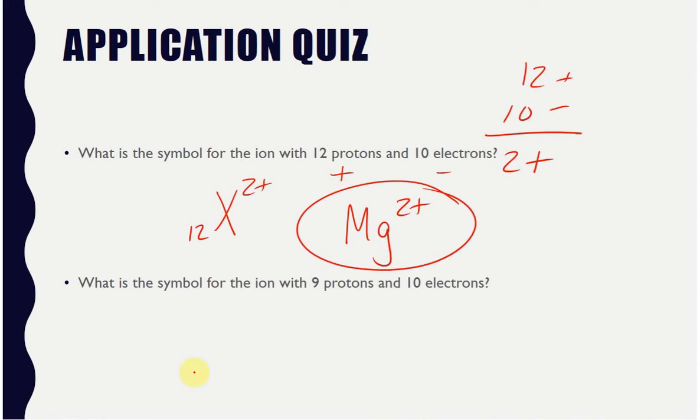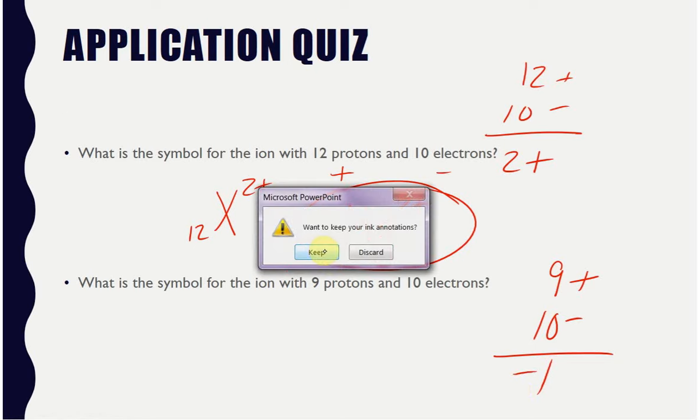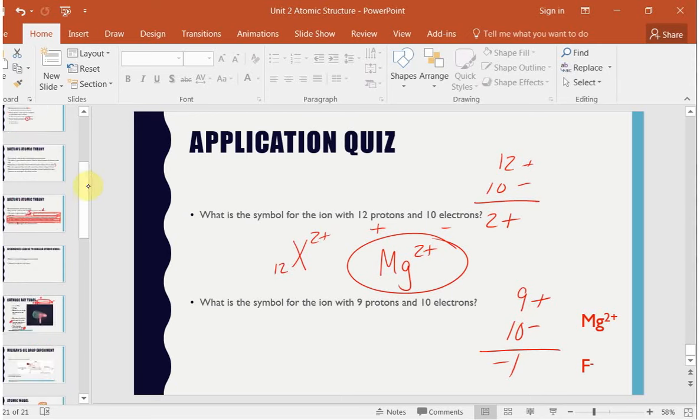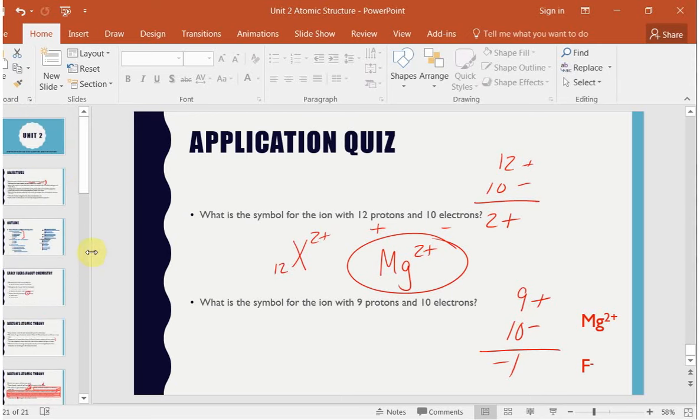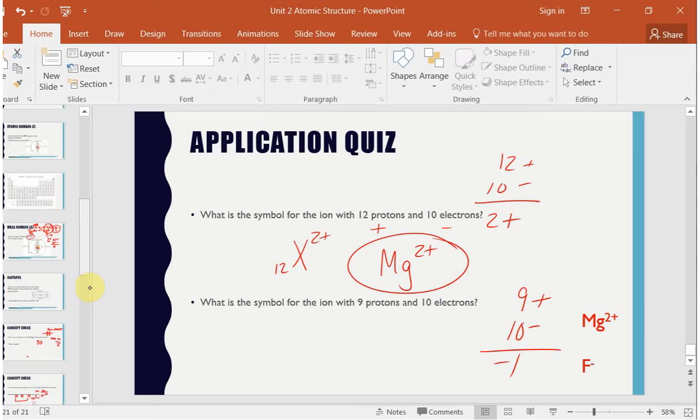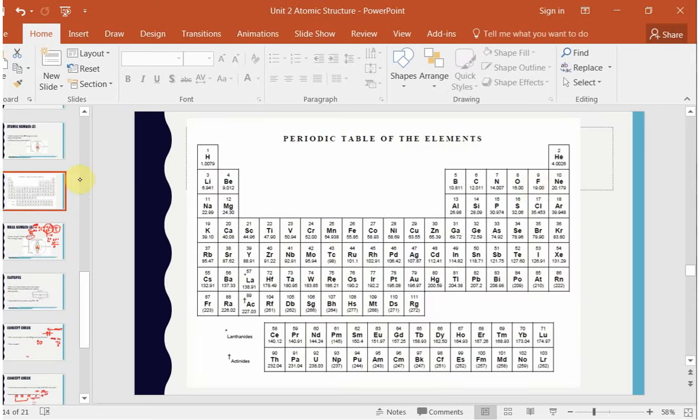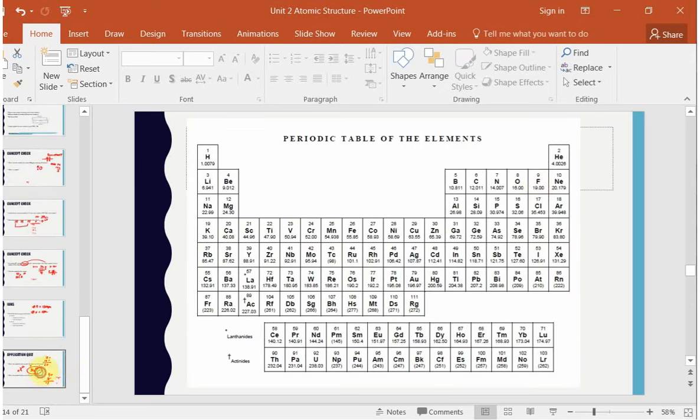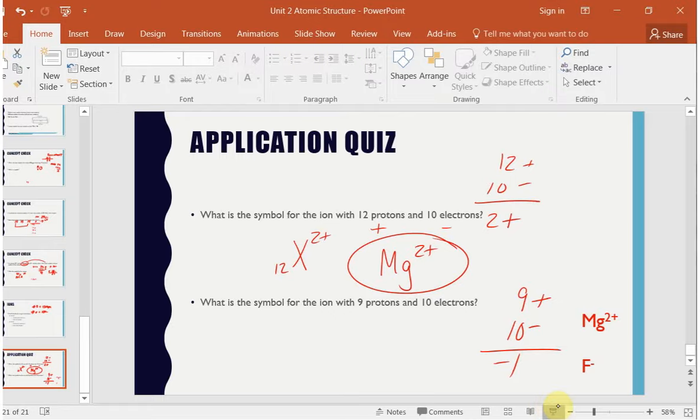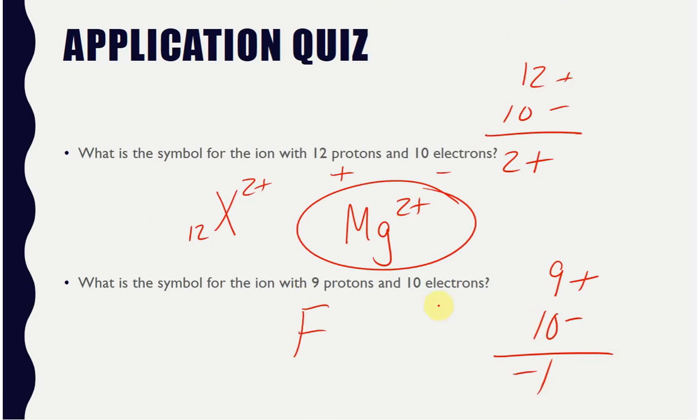If we look at something with 9 protons, 9 protons, 10 electrons, 9 positives, 10 negatives, overall we have a 1 minus charge. Again, if we go back to that periodic table, remember you guys get this on the exam. 9 is fluorine. So as we go to write this we're going to have F. Again, we don't have the mass number so we just know it's got a negative charge up here. You do have some practice in my open math so hopefully that will help.